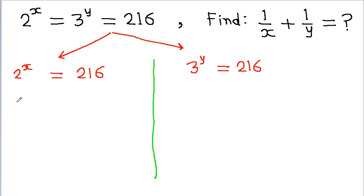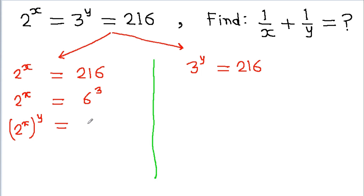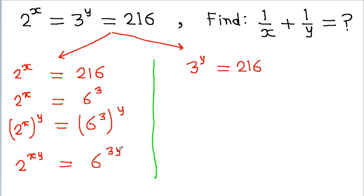Now from the first equation, we can write it as 2 to the power x is equal to 216, which is 6 cubed. Now if we raise both sides to the power y, then it will become 2 to the power x to the power y is equal to 6 cubed to the power y, or it is 2 to the power xy is equal to 6 to the power 3y.